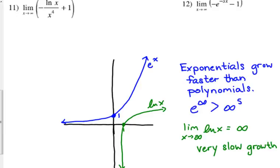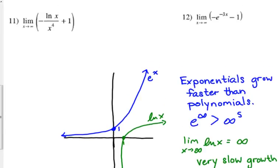Number 11, we're approaching infinity of this function at negative natural log of x over x to the 4th plus 1. So, if we plug infinity into this function, let's see what happens.